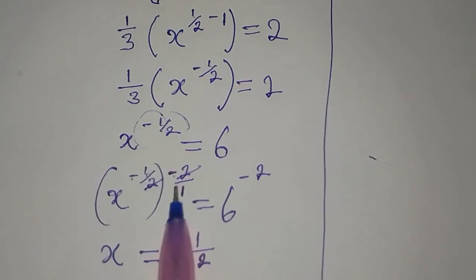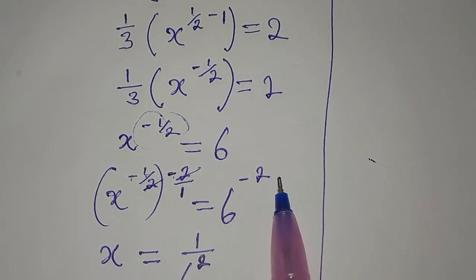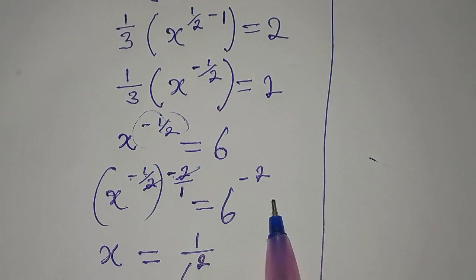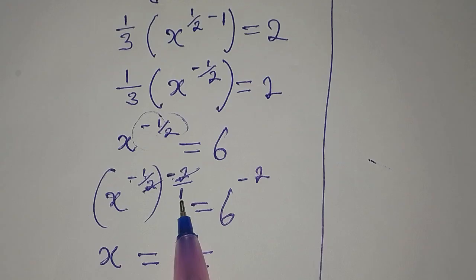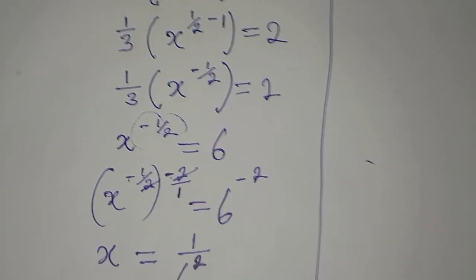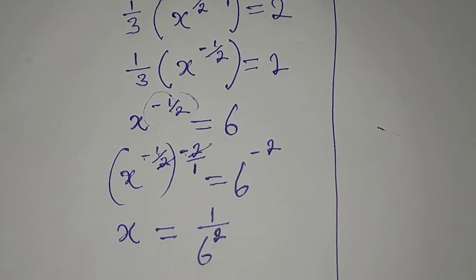So the reciprocal, which is negative 2/1, should reflect on the right. But when it goes to the right, negative 2/1 is the same as negative 2. So that is what happened over there.